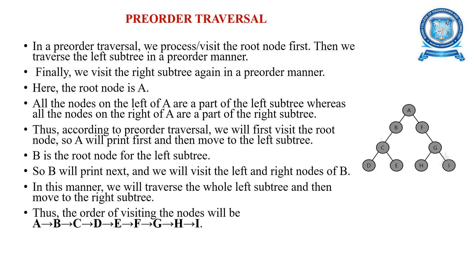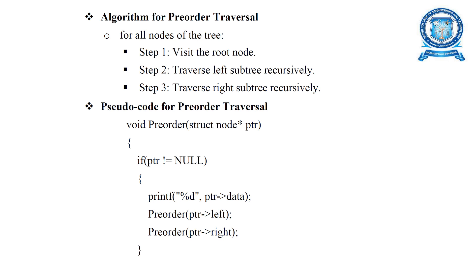In pre-order traversal, the root node is visited first, then we traverse the left sub-tree in pre-order manner. Here the root node is A, and then left of A as part of the left sub-tree: B, C, D, E, F, G, H, I. This is the order of visiting the nodes in pre-order traversal.